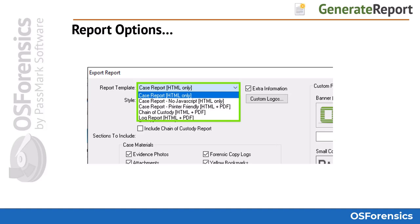Outlined here are the report template options. The default is the Case Report HTML only option. You can also choose a Case Report No JavaScript HTML report, or the printer-friendly option which will also allow you to generate a PDF report. You will also see you have the option of creating two other separate reports: a Chain of Custody report and an OS Forensics case log report. The Extra Information box, if checked, will include full file metadata for the files in the case. If left unchecked, you will get a smaller, more manageable amount of file metadata included in the report.